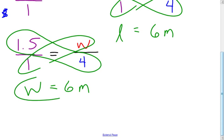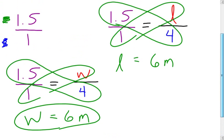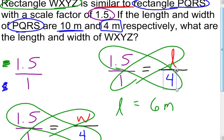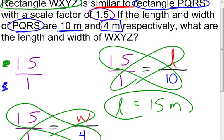This number right here should have been 10 because I was dealing with lengths. Which is going to change this. Now I have to take 1.5 times 10. And the length, sorry about that, should have been 15 meters. So the length and width of my rectangle WXYZ will be 15 meters and 6 meters. And that's going to end my examples dealing with similar polygons.